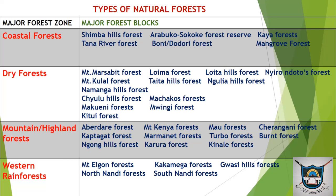Then we have the western forests, which include the Mount Elgon forest, the North Nandi forest, the Gwasi Hills forest, the South Nandi forest, and the Kakamega forest. This chart shows how the natural forests of Kenya are distributed across the country together with their types — coastal forests, dry forests, mountain or highland forests, and western forests.